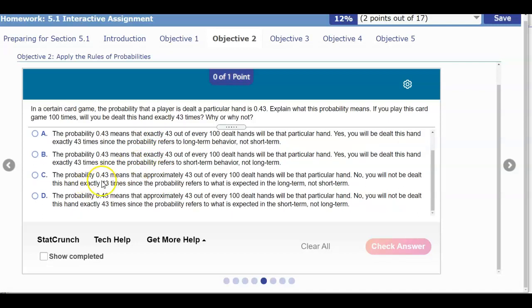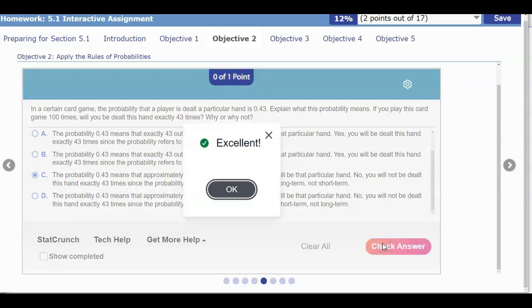The probability of 0.43 means that approximately 43 out of every 100 dealt hands will be that particular hand, and that is true. The next part says no, you will not be dealt this hand exactly 43 times, since the probability refers to what is expected in the long term, not short term. And that is correct, because this tells you what's going to happen in the long term, meaning if you did this many more times. So our answer is going to be C.